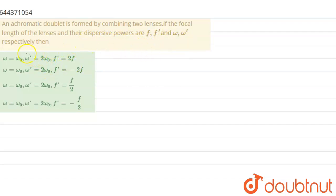First of all, when we look at the options, we can see that omega, the value for omega is same for all the options. So we have to check the value of f'. We have given f1 equals to f and f2 is equal to f'.